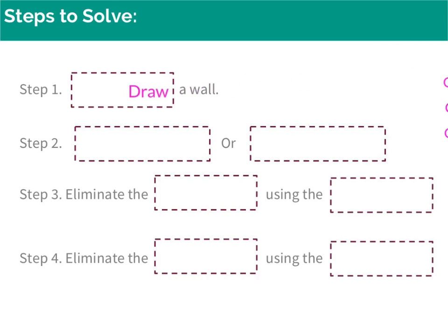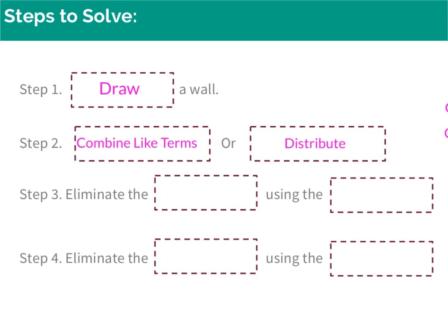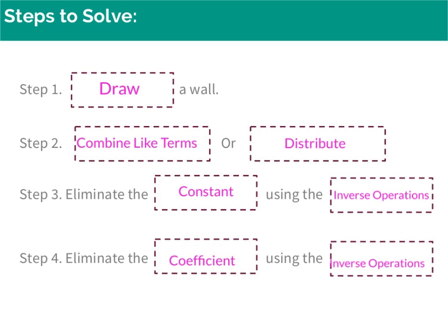Step one: we're going to draw that wall to separate the two sides of our equation. Then in step two, we're either going to combine like terms or distribute. Then we're going to eliminate our constant using inverse operations, and finally eliminate our coefficient using inverse operations. The last two steps are the same as solving two-step equations — we just have to combine like terms or distribute first to clean the equation up.